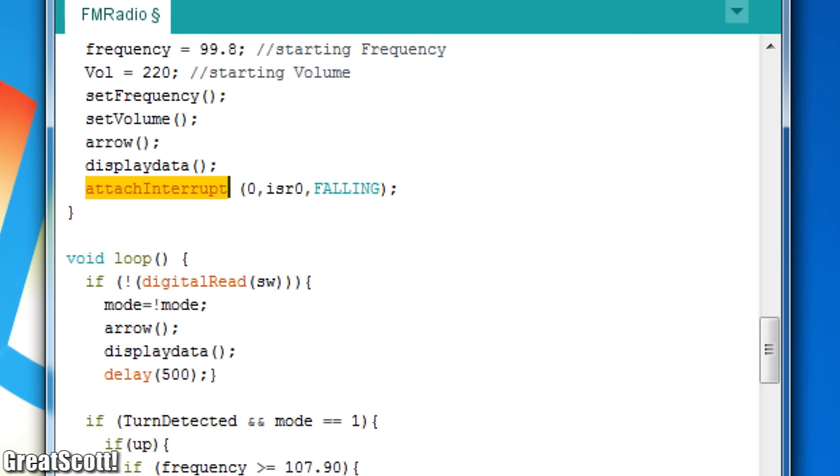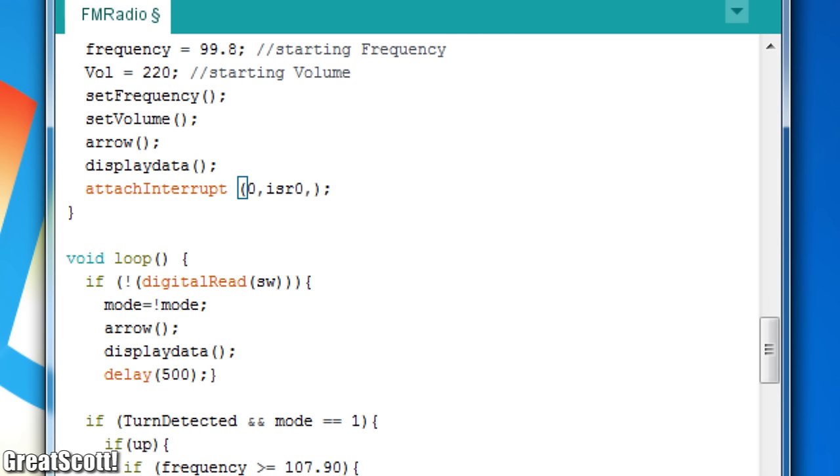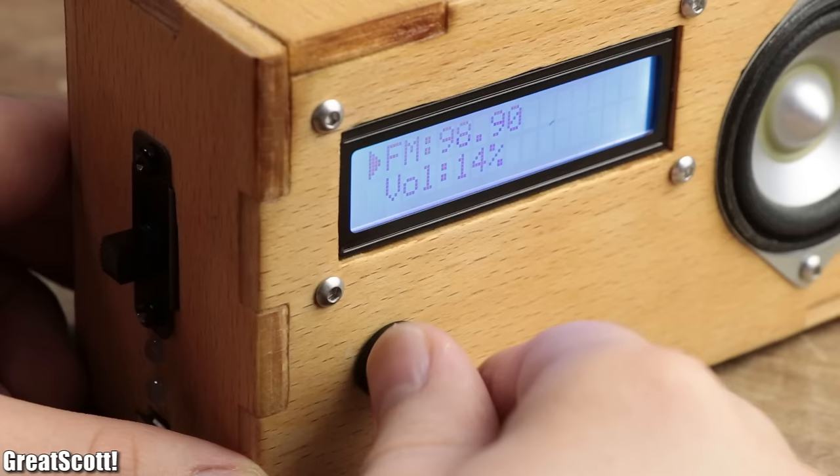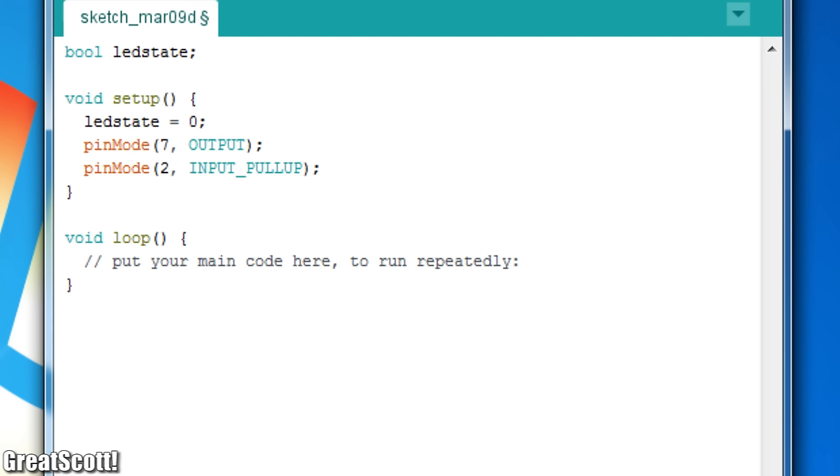That is where we use an external interrupt, which performs a function whenever the defined interrupt pin, so 0 for pin 2 and 1 for pin 3 of the Arduino Nano, is either low, high, changes, falls to ground, or rises to the supply voltage. Doesn't matter whether the code is doing something else at the moment. The interrupt always has the highest priority.